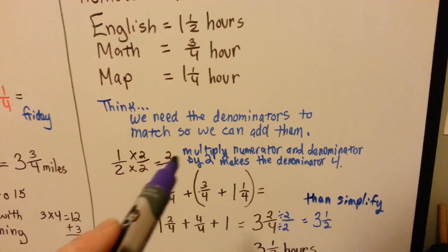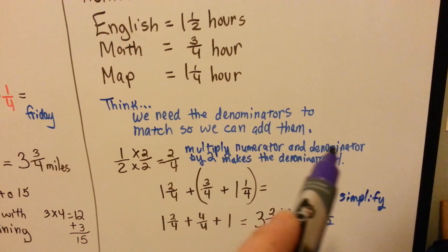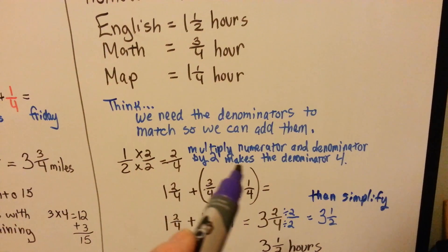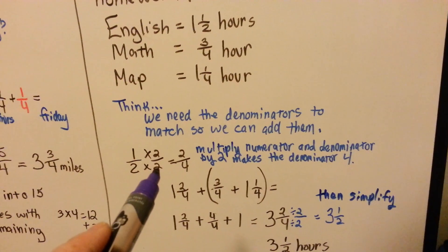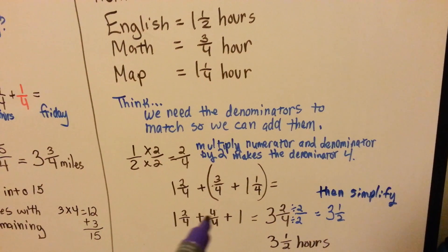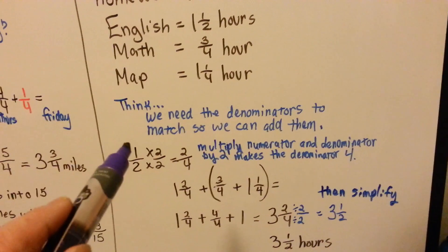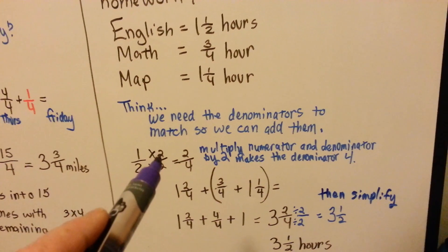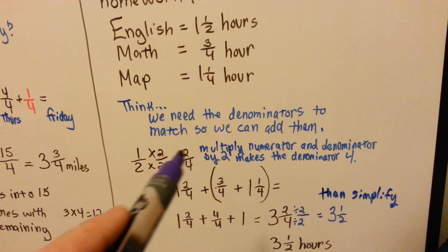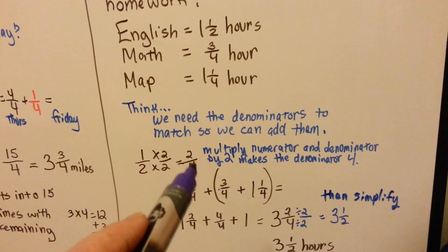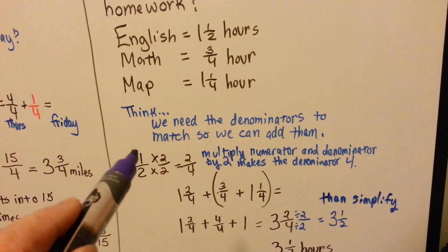We multiply the numerator and denominator by 2, and it makes the denominator 4. We multiply the denominator by 2 to make it a 4, so it matches the other one so we can add it. But the numerator gets jealous. It wants to be multiplied by 2 also. 1 times 2 is 2, 2 times 2 is 4, and we now have 2 fourths instead of the 1 half.